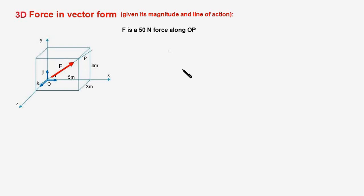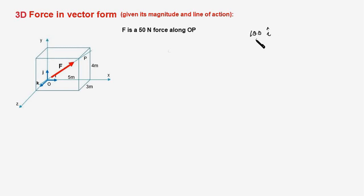We're going to begin from basics. How do we represent a 100 newton force along the positive x-axis? We know that it is 100 times i-hat, where i-hat is a unit vector along the x-axis. And how do you represent a 50 newton force along the positive y-axis? That's also fairly simple — it is 50 times j-hat. These two numbers are scalars; they represent the magnitude of the force, and i-hat and j-hat are unit vectors along the positive x and y axes.